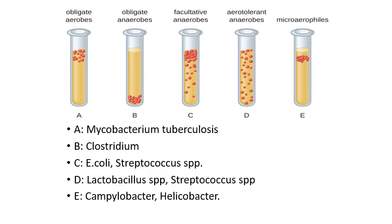Some examples of different species in these categories: obligate aerobes include Mycobacterium tuberculosis, the causative agent for tuberculosis — which makes sense since tuberculosis is a disease of the lungs where there's a lot of oxygen. Some species of Clostridium are obligate anaerobes. Facultative anaerobes include many species such as some strep species and E. coli. Aerotolerant anaerobes include things like Lactobacillus that lives in your gut and Streptococcus. Microaerophiles include things like Campylobacter and Helicobacter.